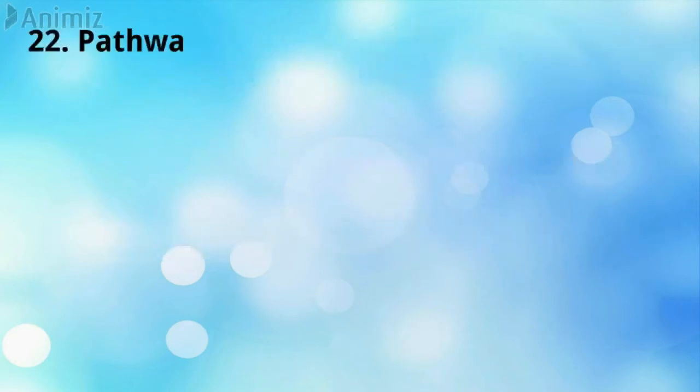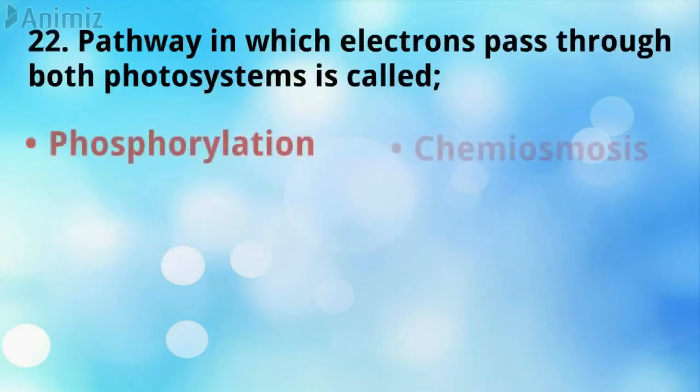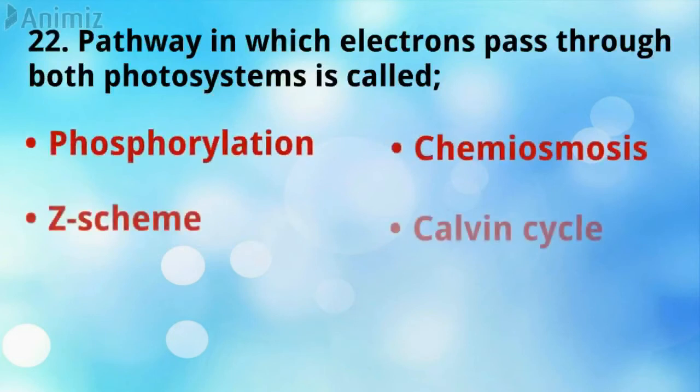The pathway in which electrons pass through both photosystems is called the Z scheme.